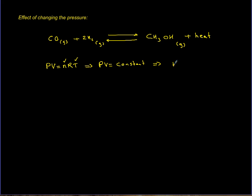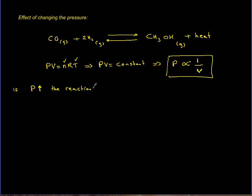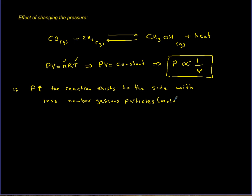Sometimes in exam questions, examiners try to trick you — if pressure goes up, volume is going down, and sometimes they phrase it as volume is decreasing. You have to know this. If pressure goes up, the equilibrium shifts to the side with fewer gaseous particles — in other words, fewer moles — because we want N to decrease so the pressure comes back to what it was.